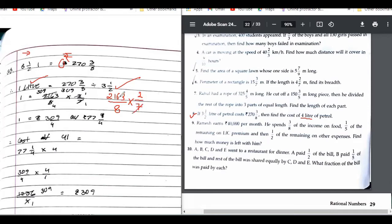Now this will be 7 times 3 is 21, then 0, 9, 1, 4. So your answer is 309 upon 4. That should be in rupees.